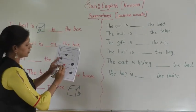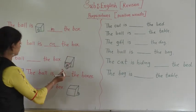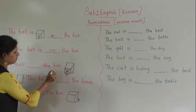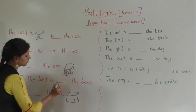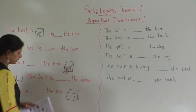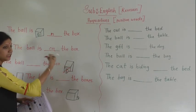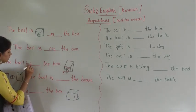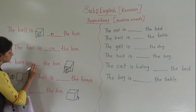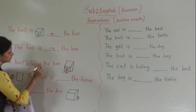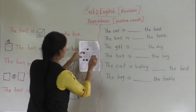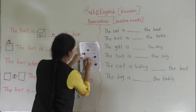The ball is dash the box. Who will tell me this answer? Check the position of ball — where is it? The ball is in front of the box. So here you write down: in front of the box. The ball is in front of the box. Write: in front of.